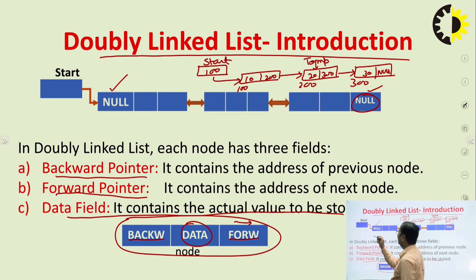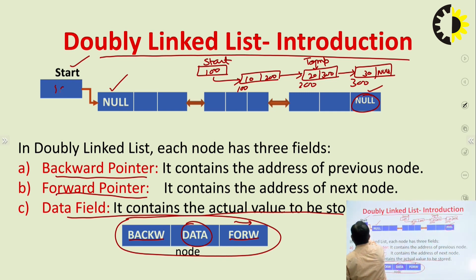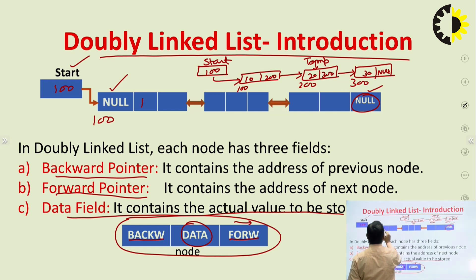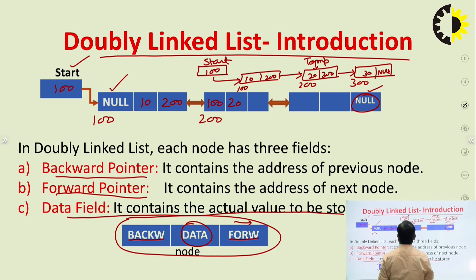There is a start pointer, same as in the linked list. The start pointer contains the address of the first node. For example, suppose this is the first node with address 100 — its address is stored in the start pointer. The data field and forward address field contain the address of the next node. For the second node, the backward field contains 100 (address of the first node) and the forward field contains 300 (address of next node).